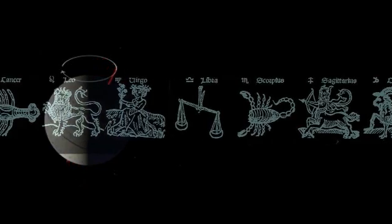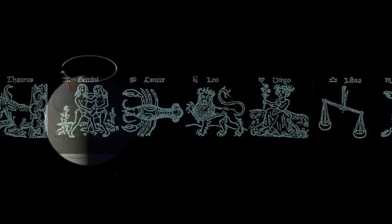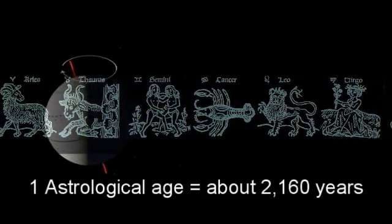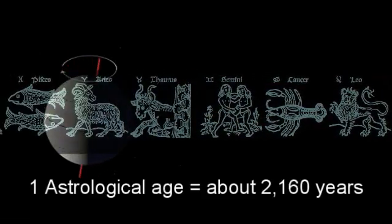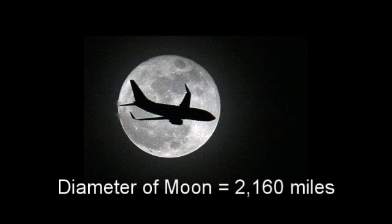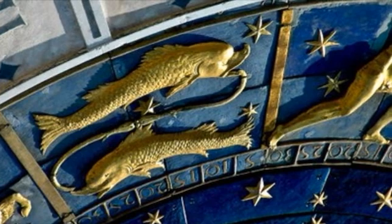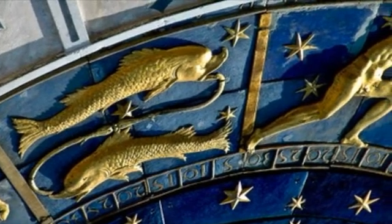So the vernal or spring equinox precesses or moves backwards through the signs of the zodiac in what is referred to as an astrological age. Each age lasts for about 2,160 years, which interestingly and coincidentally is the moon's diameter in miles. So we are at the end of the age of Pisces and coming into the age of Aquarius.